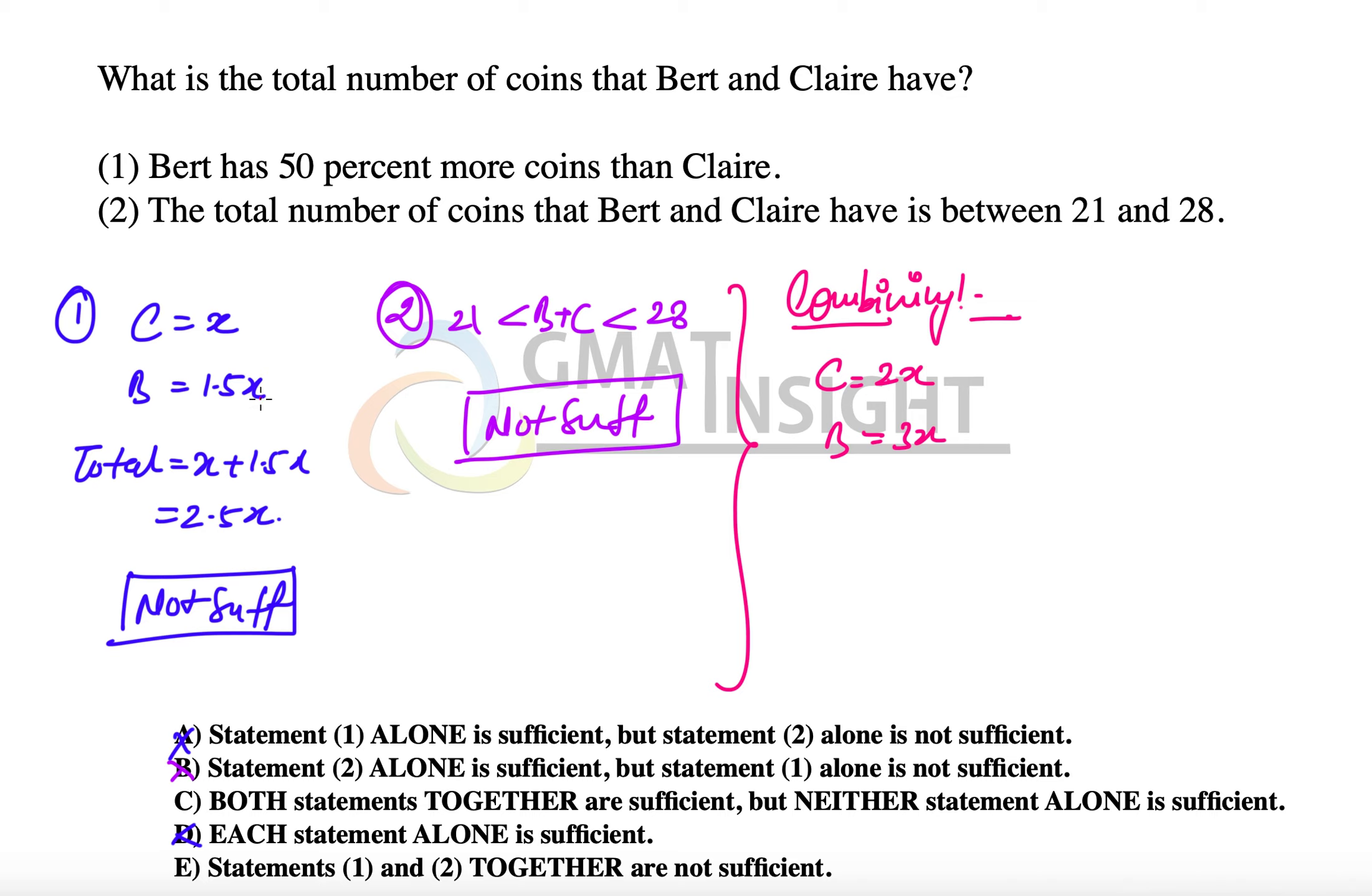Because we know that x has to be an even number for 1.5x to be integers. That means the total number of coins that B and C together have should equal 5x.